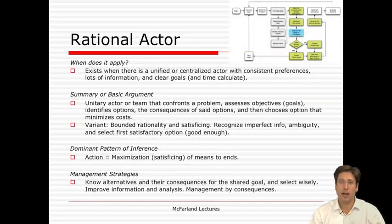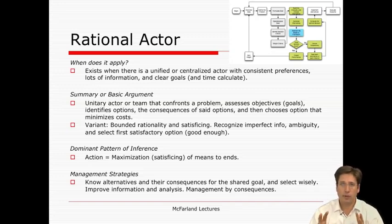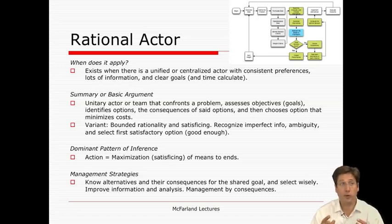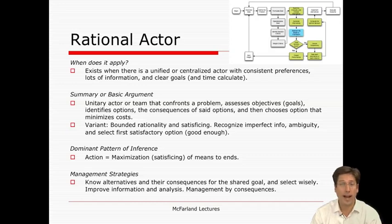The first theory we covered was the rational actor model, also known as the rational choice model. To my side here, you can see an actual flow diagram that portrays the theory as a series of if-then sequences of decisions. The first thing to ask about any of these theories is when does it apply? In the case of rational actor theory, it applies when you confront or perceive a unified team or actor that seems to be driving a lot of the processes of the organization — an actor that typically has consistent preferences, lots of information, clear goals, and time to calculate. So it's better perhaps for planning than for reacting.